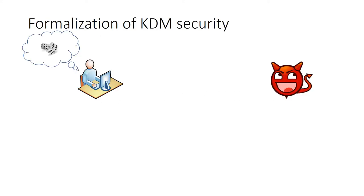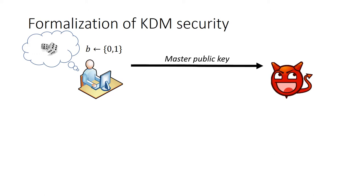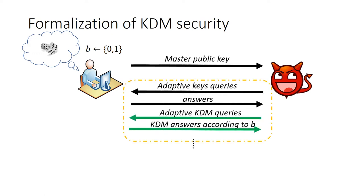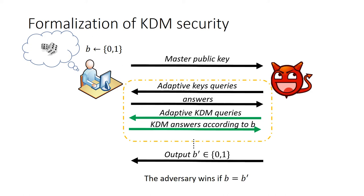More formally, the KDM security can be described by a security game between the challenger and the adversary. At the beginning, the challenger first chooses a random bit b, and then sends the master public key to the adversary. Then the adversary can conduct key extraction and KDM queries. During this process, the challenger answers KDM queries according to the previously chosen b. Finally, the adversary responds with a bit b'. The adversary wins the game if b equals b'. The KDM queries are formed by functions from the KDM challenging function class. If b equals 1, the challenger returns the encryption of functions of the secret key; otherwise, the challenger returns the encryption of 0.